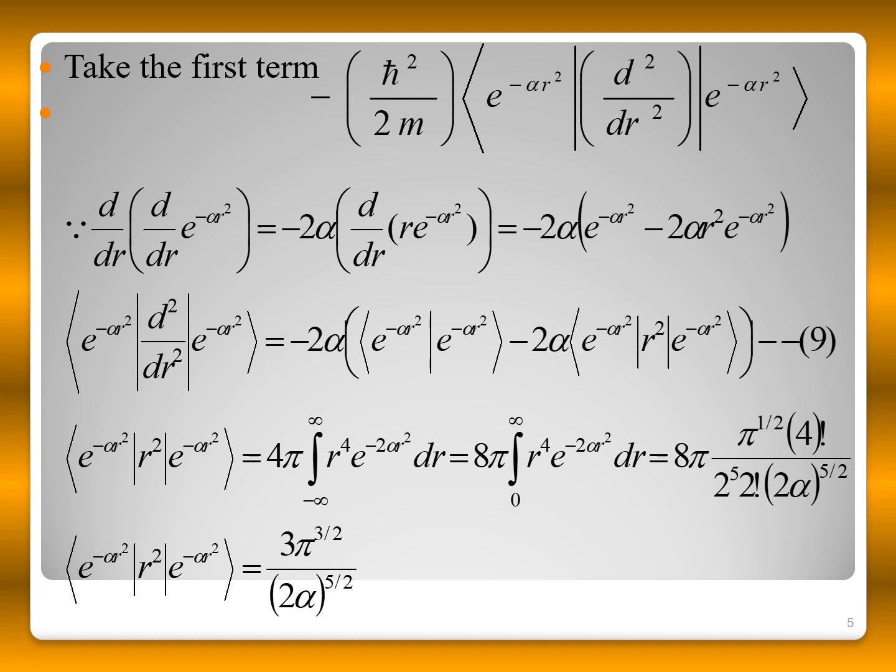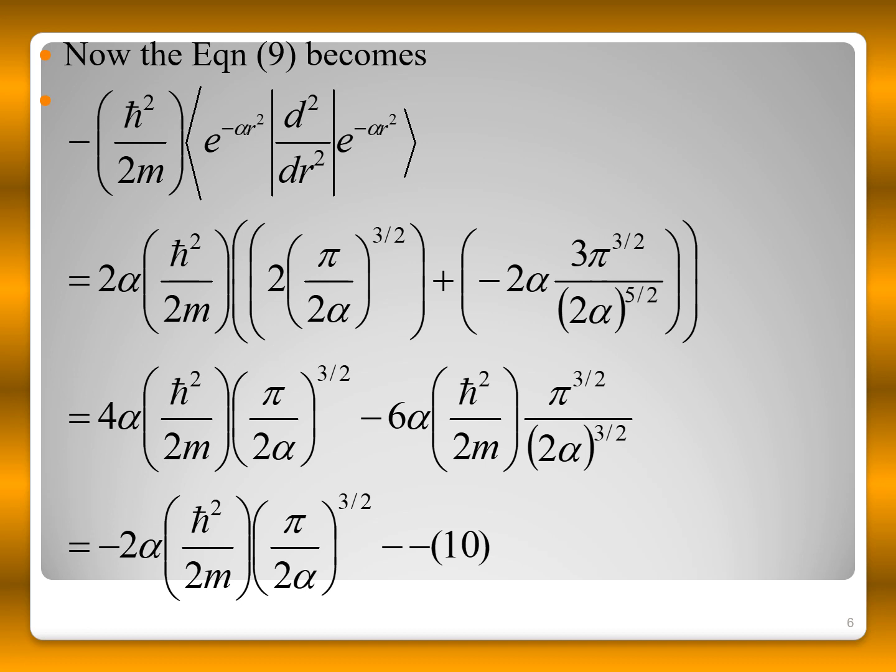For the first term, the expectation value of d²/dr²: applying d²/dr² to e^(-αr²) by computing d/dr of d/dr of the function, then integrating, yields a factor of -2α times e^(-αr²), plus a contribution involving ⟨r²⟩ multiplied by 2α. Using the standard integral to evaluate ⟨r²⟩ and substituting the probability, the expectation value of d²/dr² becomes -2α · (ℏ²/2m) · (π/2α)^(3/2).